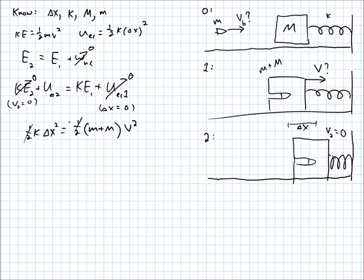I can multiply both by 2 to get rid of those, divide over the m plus M, and take the square root, and I get v is equal to the square root of, put the delta x out in front, so there is my velocity, with a little algebra that I hopefully didn't mess up.